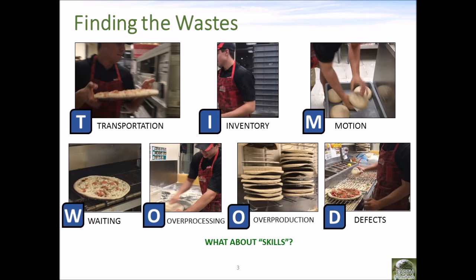For inventory, you might have noticed the gray boxes stacked up behind the worker that were filled with dough. There was a lot of money and labor invested in dough that they may not have needed today. It also takes up a lot of space. You might have also noticed all the pre-folded pizza boxes laying around. For motion, when the worker reached back and down on the ground to get the dough, that is excessive motion. The dough should be closer to the worker. There is also motion when reaching to grab the ingredients — they could be placed in front of the pizza, closer to the worker. Reaching can lead to injury or cause discomfort.